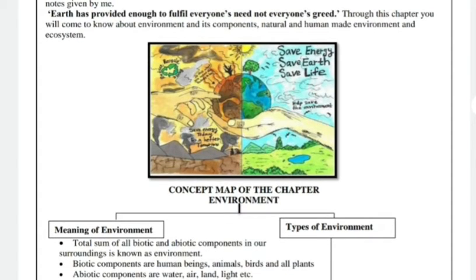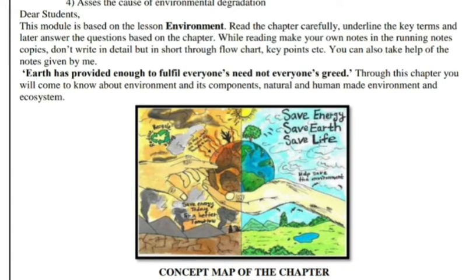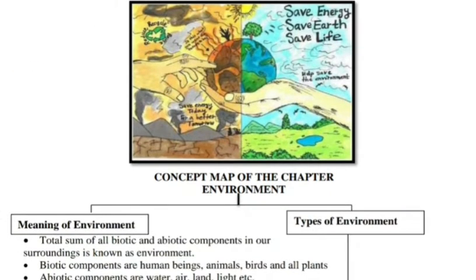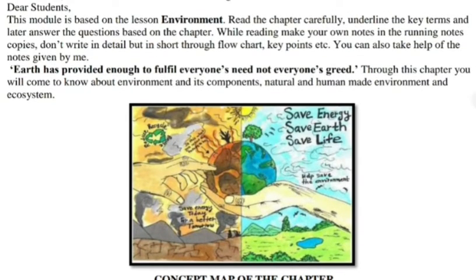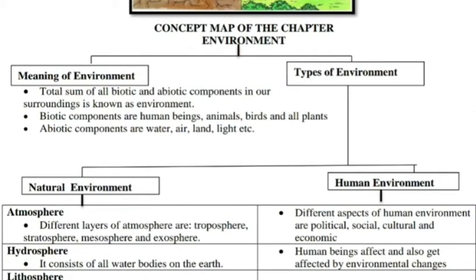Earth has provided enough to fulfill everyone's needs. Through this chapter, you will learn about environment — its components — natural environment, human-made environment, and ecosystem. This is very simple. Now, how many concepts have we covered? First of all, the meaning of environment: the total sum of biotic and abiotic components in your surrounding is known as environment.